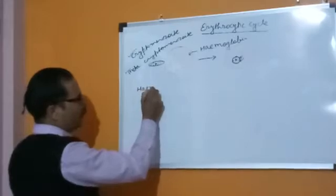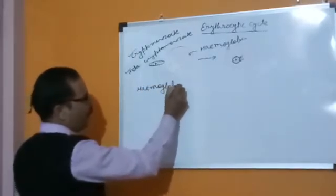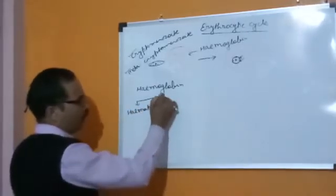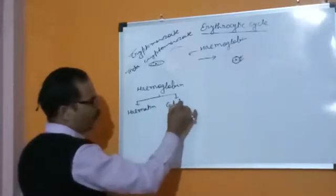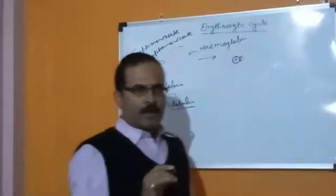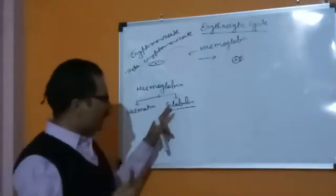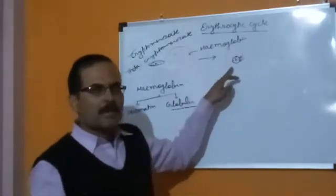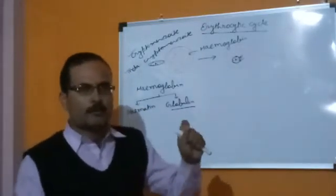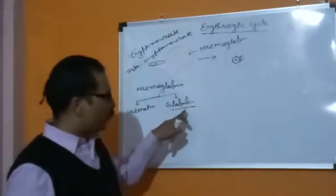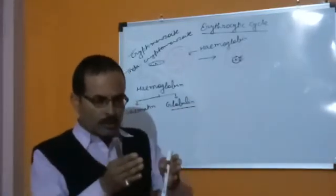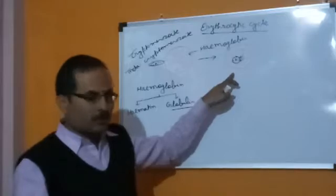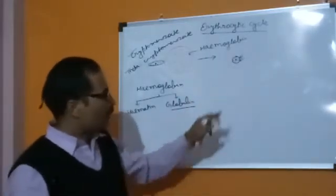Hemoglobin is the respiratory pigment present in our RBC. It consists of two parts: one is called hematin, which is the iron-containing compound, and one proteinous part called globin, or globulin. This is a protein. When the parasite feeds on the hemoglobin, it is capable of digesting the globulin — this protein is digested into amino acids, and those amino acids are used by the parasite to form its own protein requirement.